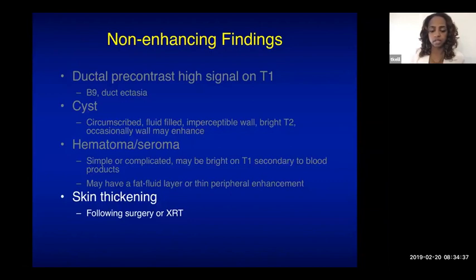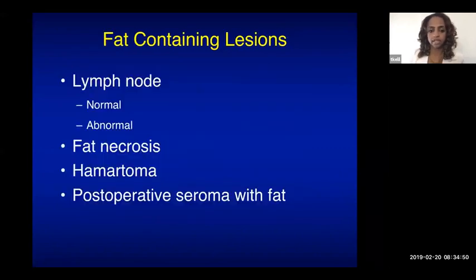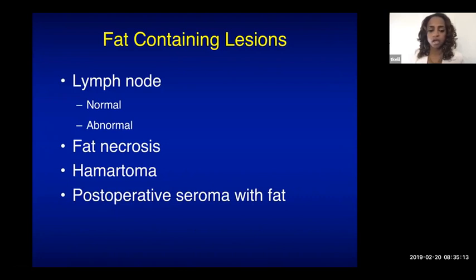Skin thickening from prior radiation is another non-enhancing finding. Fat-containing lesions include lymph nodes — normal or abnormal based on morphology and size, identified by their fatty hilum on T1 — fat necrosis, hamartoma, and post-operative seroma containing fat.